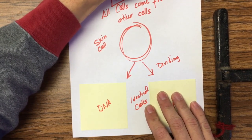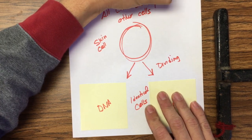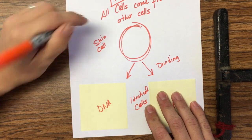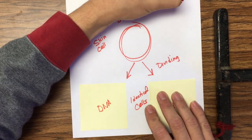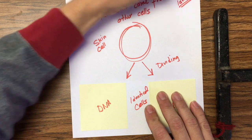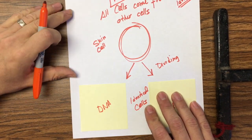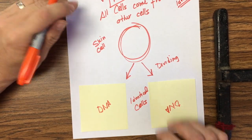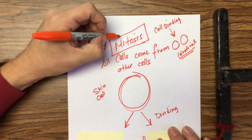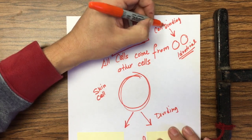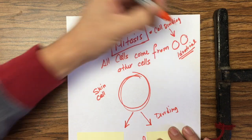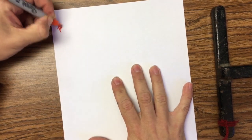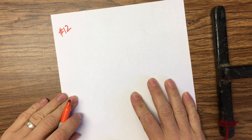The two new cells are identical. Our body always needs to make new cells, and it does so through mitosis. Mitosis equals a cell dividing to make new identical cells.